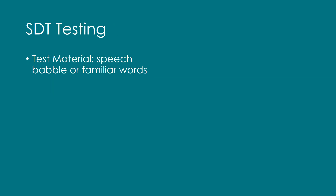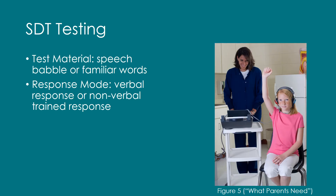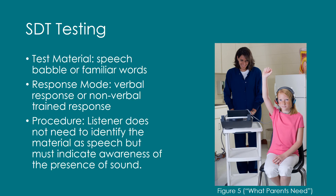SDT testing uses stimuli like speech babble or familiar words. The audiologist would read a list of words and the listener would have to make it clear they heard the word. The response mode of SDT testing is typically a verbal response or a nonverbal trained response, like raising your hand or ringing a bell, as seen in Figure 5. Determination of SDTs involves a detection task similar to the one used in pure tone audiometry; the listener does not need to identify the material as speech, but must indicate awareness of the presence of sound.